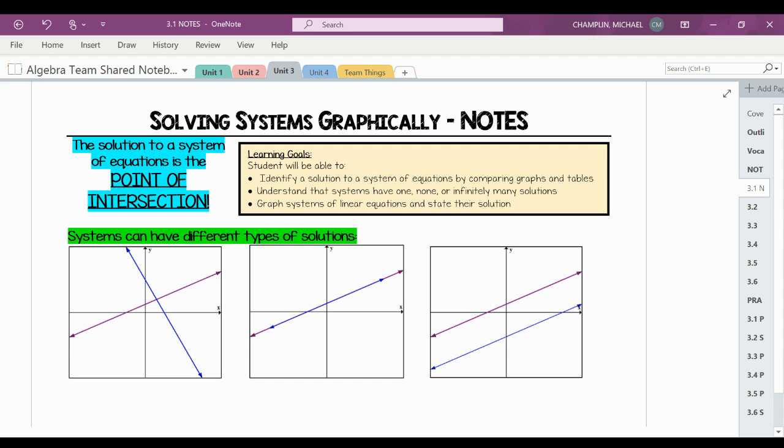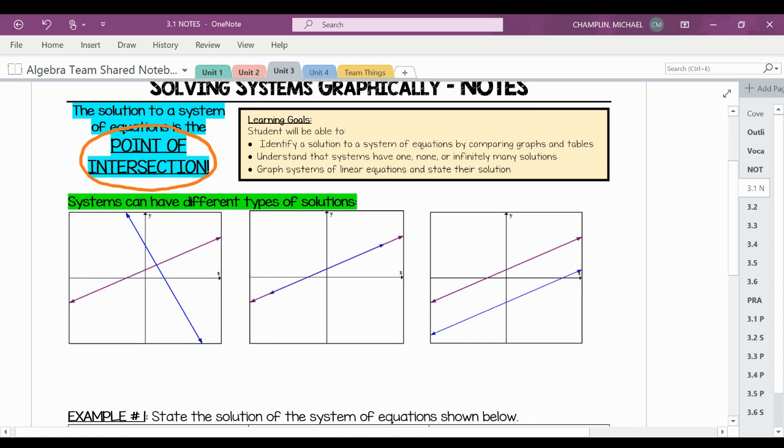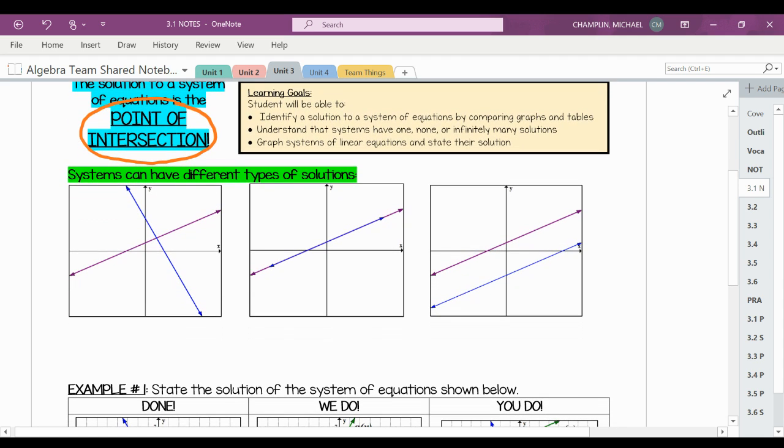All right, well, what's this solution we're talking about? Well, technically, by looking at a graph, all we're doing is looking for a point of intersection between two or more lines. So let's take a look at these three graphs I have right here. Looking at this first one, I have two lines that look like they are intersecting at one point. If they only intersect at one point, that means they have one solution.